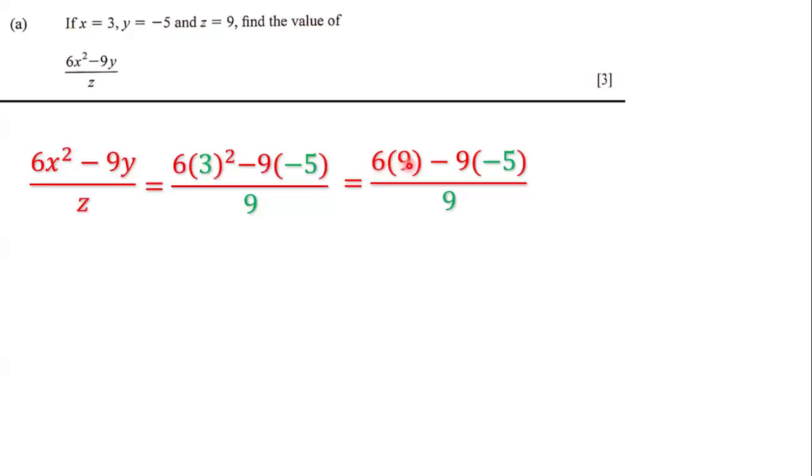Now, what is 6 times 9? Well, 6 times 9 is 54, and negative 9 multiplied by negative 5 is positive 45. So on the numerator, we have 54 plus 45 all over 9.